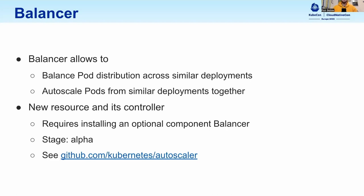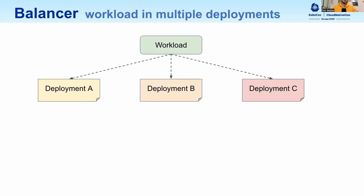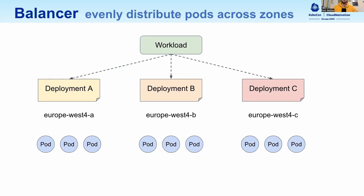I'm going to cover Balancer, a new resource in the autoscaling space. It allows you to control how pods are distributed across similar deployments and autoscale them together. We've introduced the Balancer resource and a controller for it. To use it, you need to install an optional component from kubernetes/autoscaler. It's just been published, so it's at an early alpha stage. So why would you want to distribute pods in the workload across multiple similar deployments? There are a couple of use cases. Perhaps you have a regional cluster and want to ensure that the workload is spread evenly across zones for availability reasons — you have multiple deployments, each responsible for a different zone.